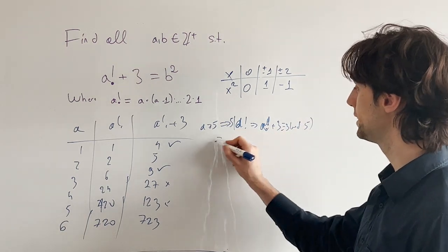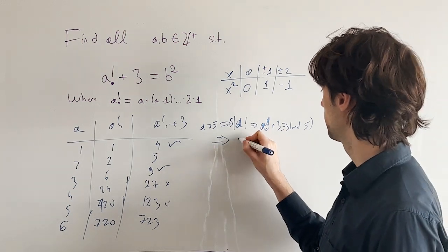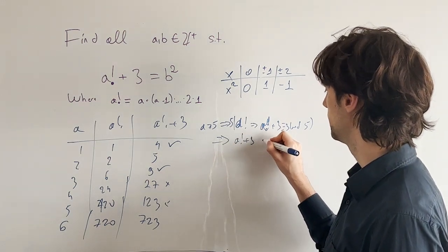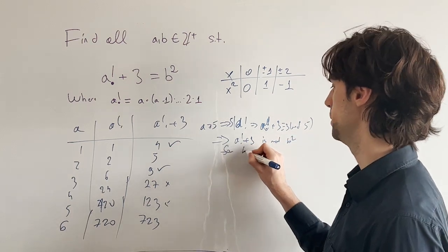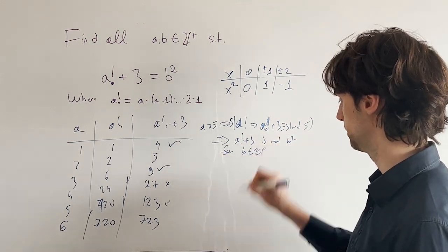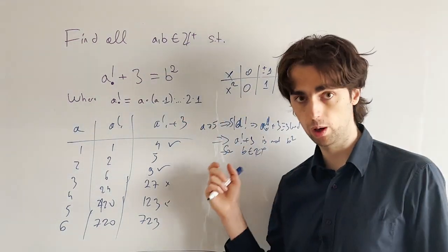And now this here, right here, implies that a factorial plus 3 is not b squared for b, that's a positive integer. And this finishes up the problem in one way.